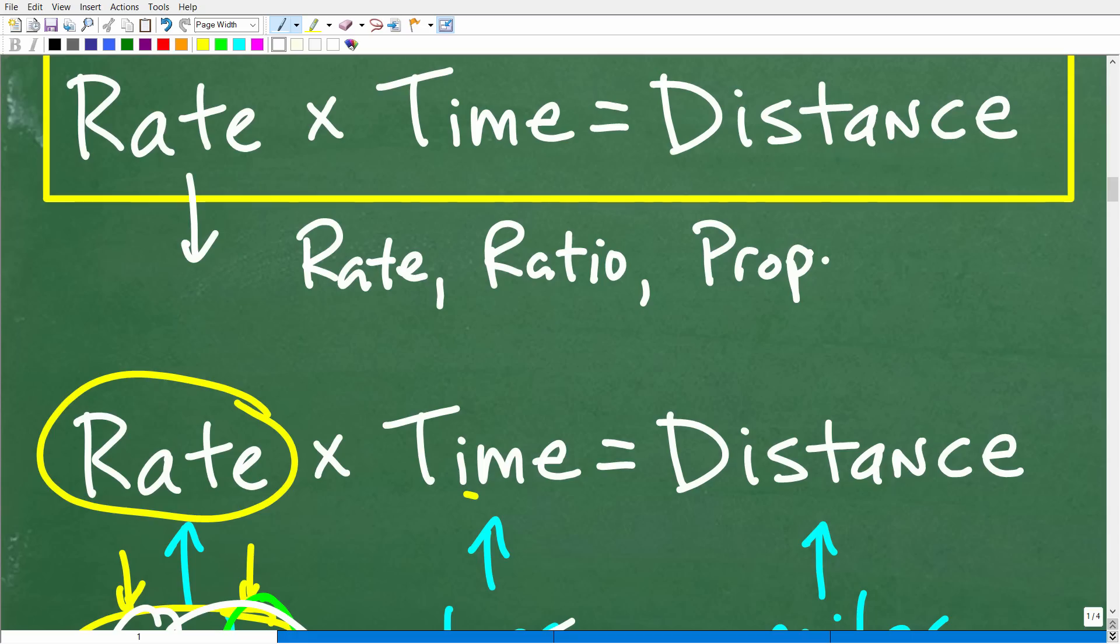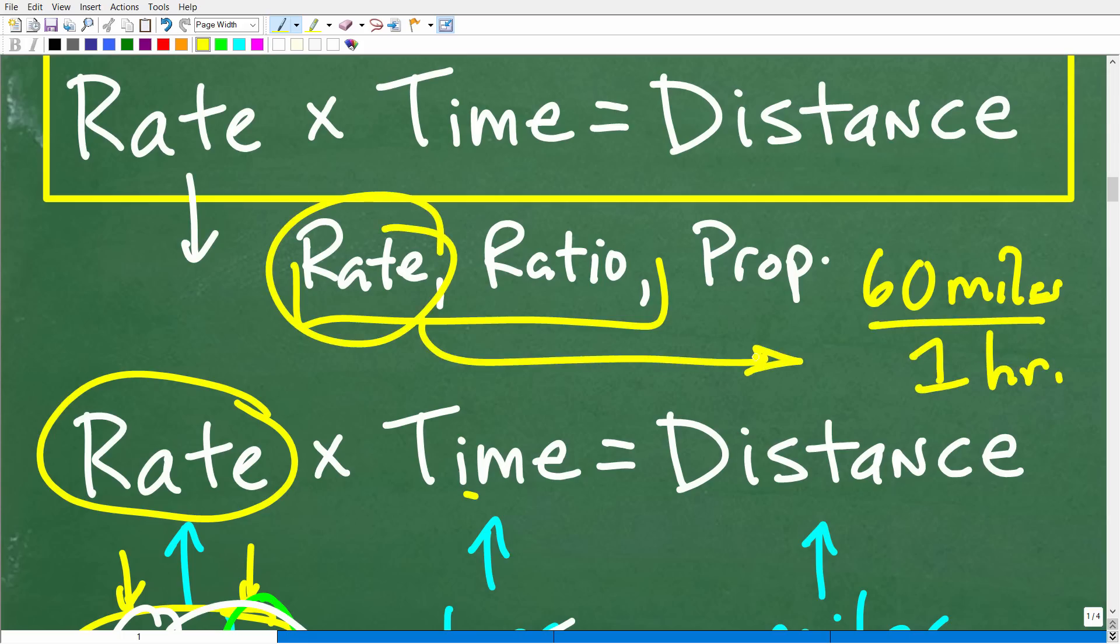Okay, rates, ratios, and proportions. All these are like they're all best friends, they're all family. And what they are right here, okay, these guys right here are fractions. Okay, so that's what rates and ratios are. We're comparing two units of, we're comparing two numbers and we're comparing them in terms of a fraction, like say 60 miles per one hour. Okay, so this is a fraction.